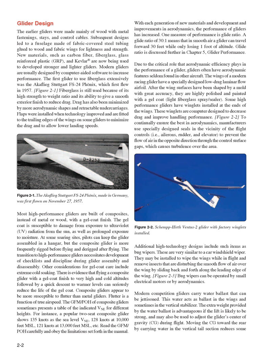Modern gliders are usually designed by computer-aided software to increase performance. The first glider to use fiberglass extensively was the Akaflieg Stuttgart FS24 Phoenix, which first flew in 1957. Fiberglass is still used because of its high strength-to-weight ratio and its ability to give a smooth exterior finish to reduce drag. Drag has also been minimized by more aerodynamic shapes and retractable undercarriages.